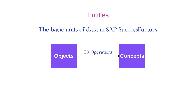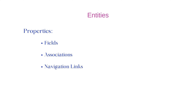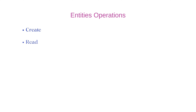Entities represent HR objects such as employees, jobs, positions, goals, and more. Entities also have properties such as fields, associations, and navigation links that describe their attributes and relationships. Entities also have operations such as create, read, update, and delete that define how they can be manipulated by external systems.